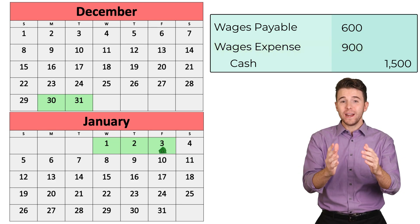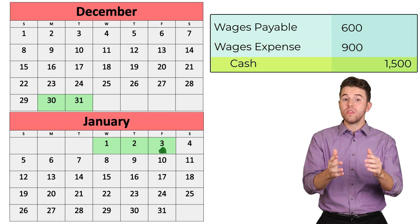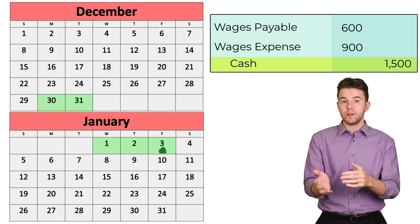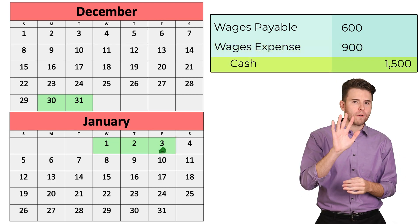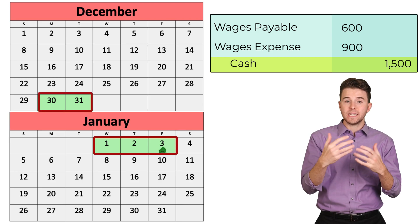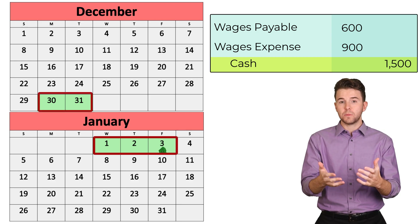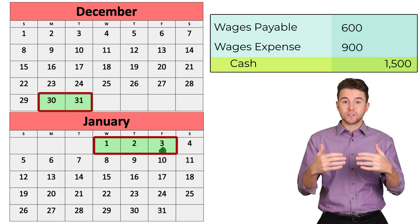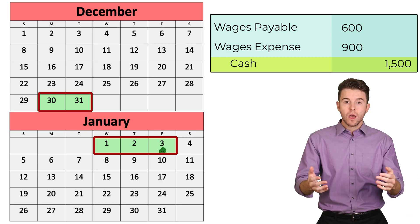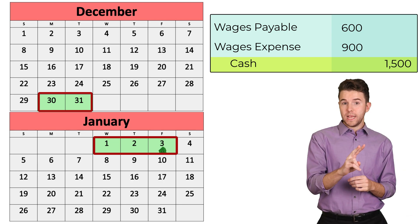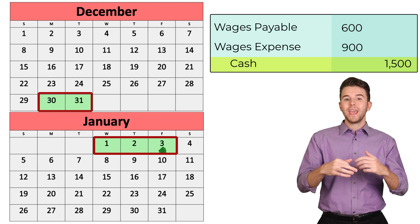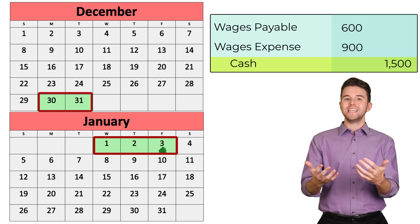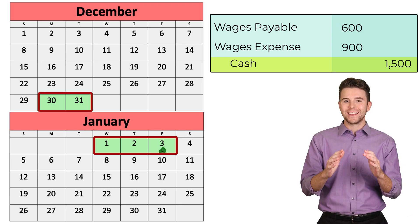We credited cash for $1,500, or five workdays at $300 per day, because we had to pay the employee their wages for the week, which included two days in December and three days in January.